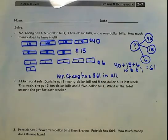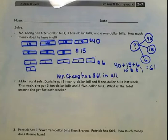Number 2. At her yard sale, Danielle got one $20 bill and five $1 bills last week. This week, she got three $10 bills and three $5 bills. What is the total amount she got for both weeks?